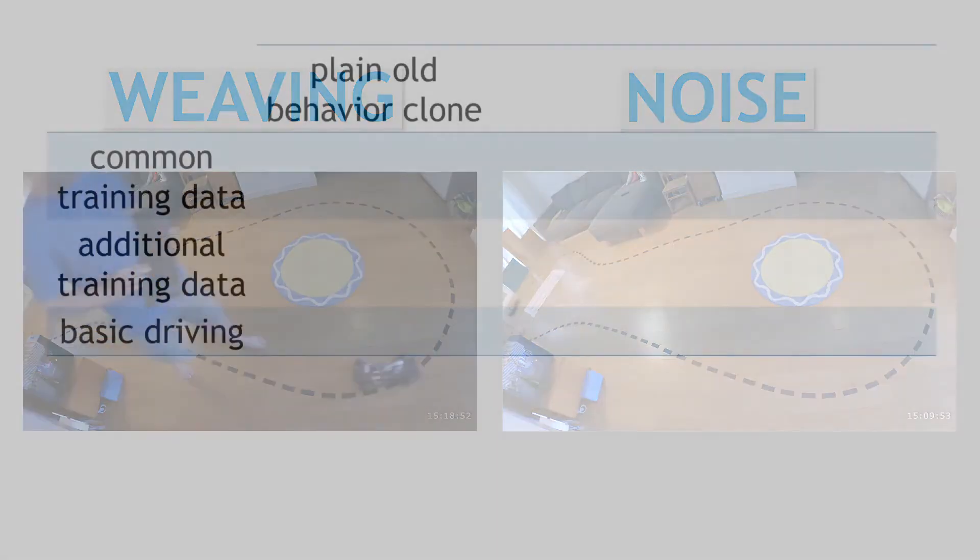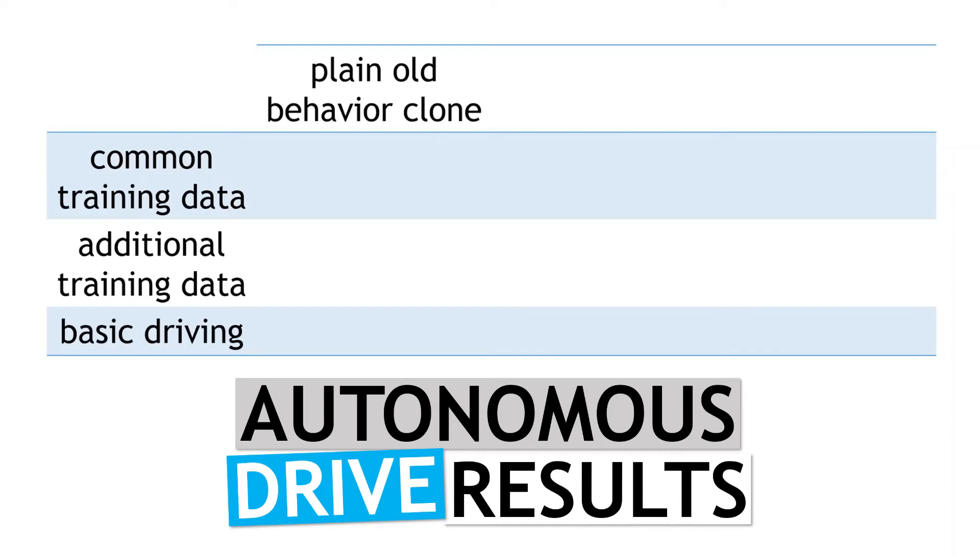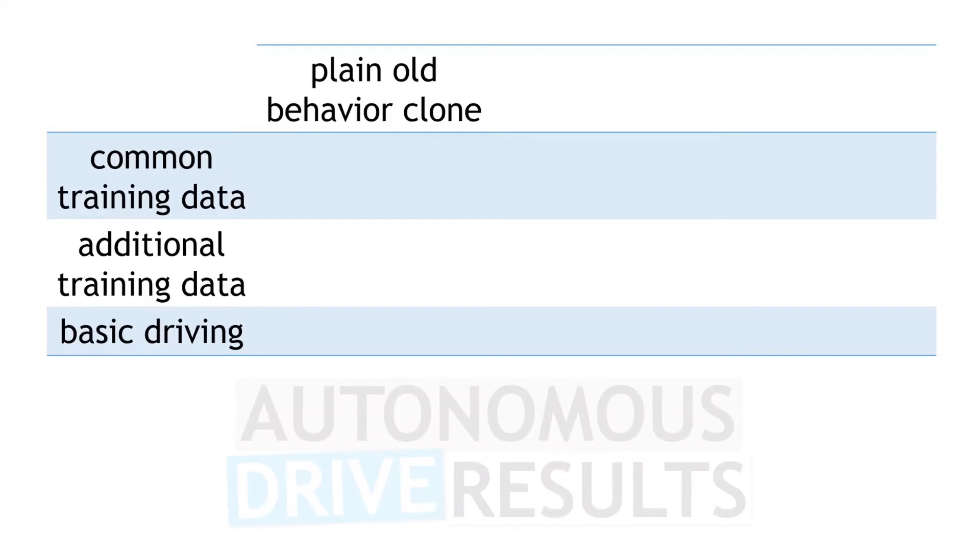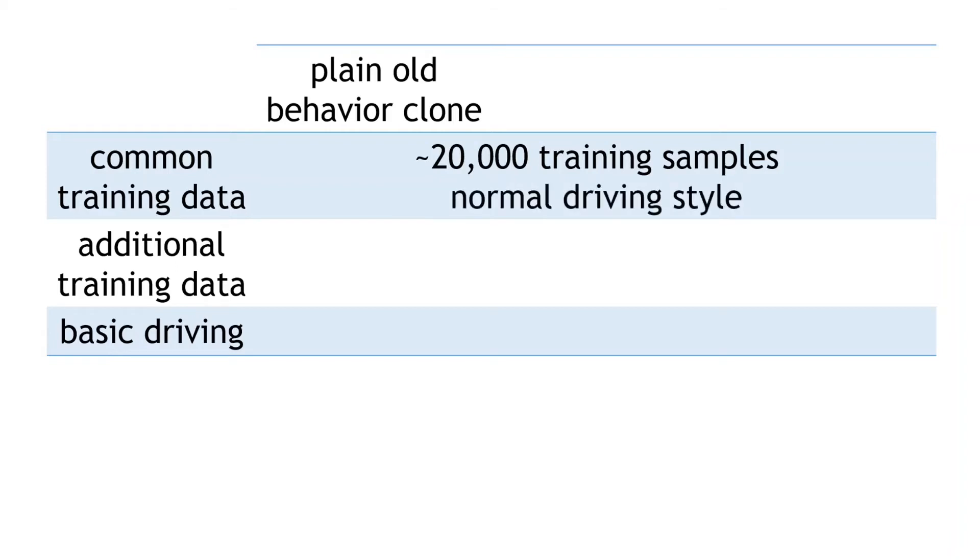We'll start off with our previous results from the plain old behavior cloning approach, just for reference. With the plain old behavior cloning, the policy was trained using a common set of around 20,000 image samples. These were the normal driving behavior, trying to stick as close as possible to the dashed track.